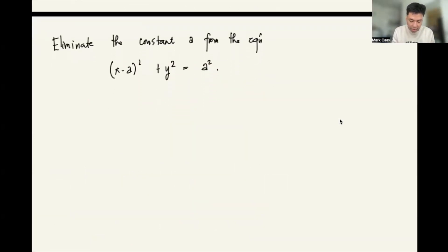Eliminate the constant A from the equation x minus A quantity squared plus y squared equals A squared. So how do we solve that? This is like a circle, equation of a circle. By differentiation, we have, how do we take the derivative of this?